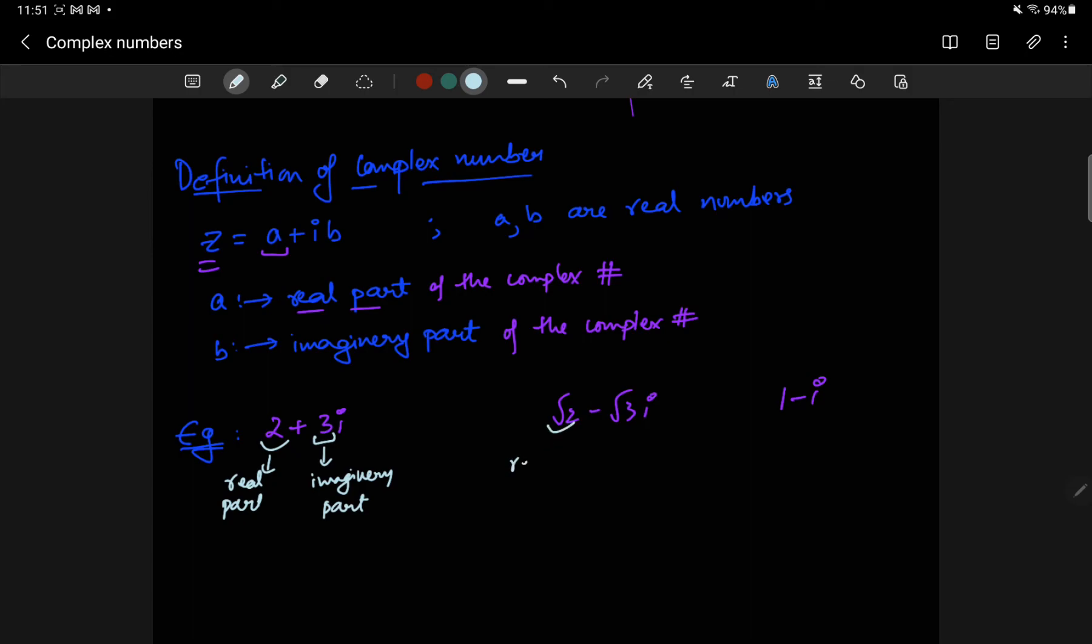Root 2, so here, the real part is going to be root 2, and the imaginary part is going to be negative root 3. Here, the real part is 1, and the imaginary part is negative 1.